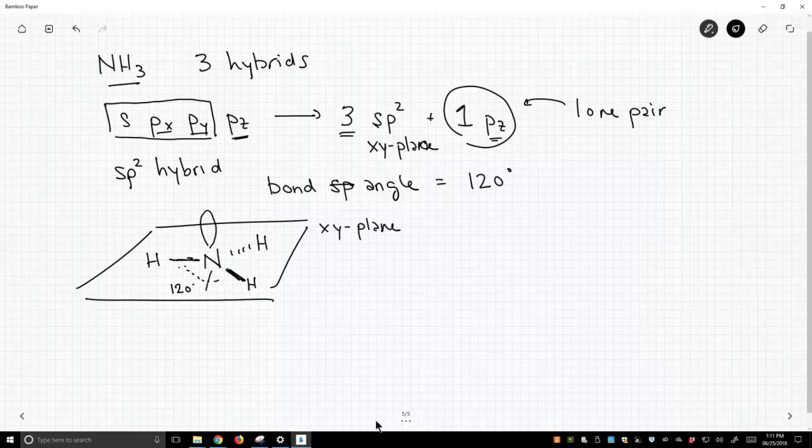So p orbitals look like this. There's a top part and a bottom part. I'm going to put the two lone pairs in one of the lobes of the p orbital. And I want to emphasize, if ammonia had sp2 hybridization, then this is how it would appear.